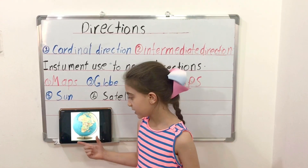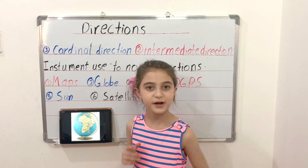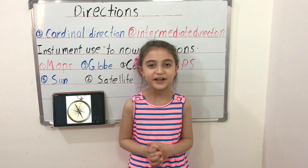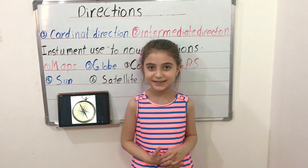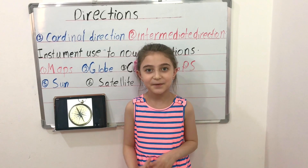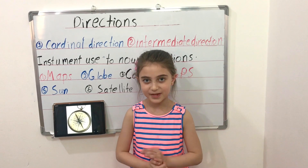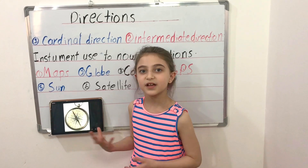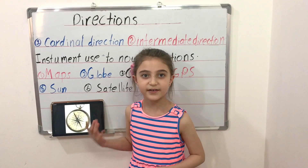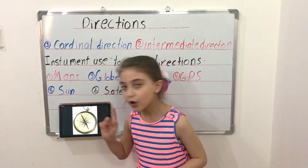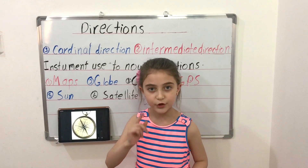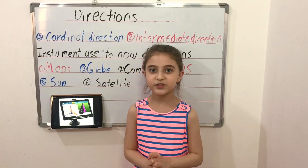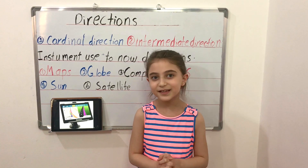A globe tells us where our cities and countries are. What is a compass? A compass is an instrument that shows us where our directions are. The needle always points toward north.